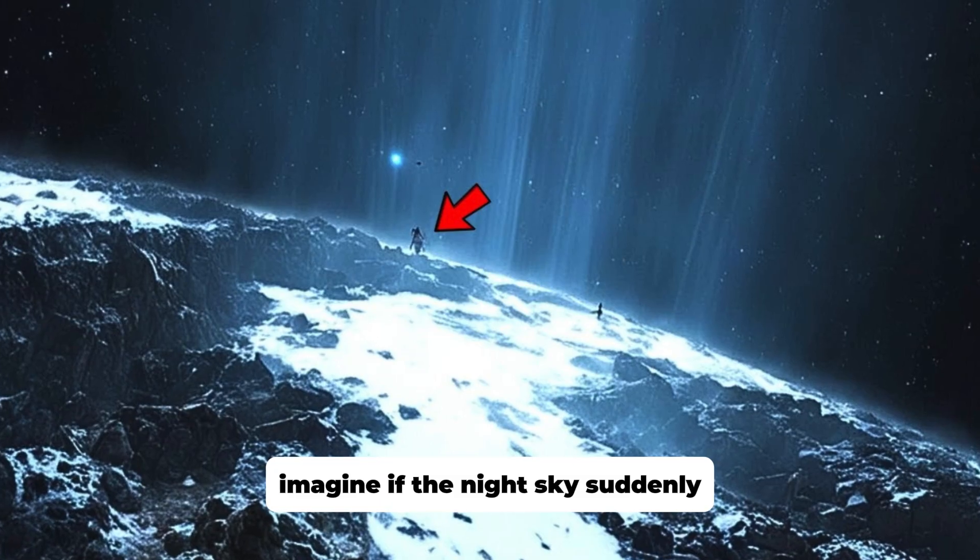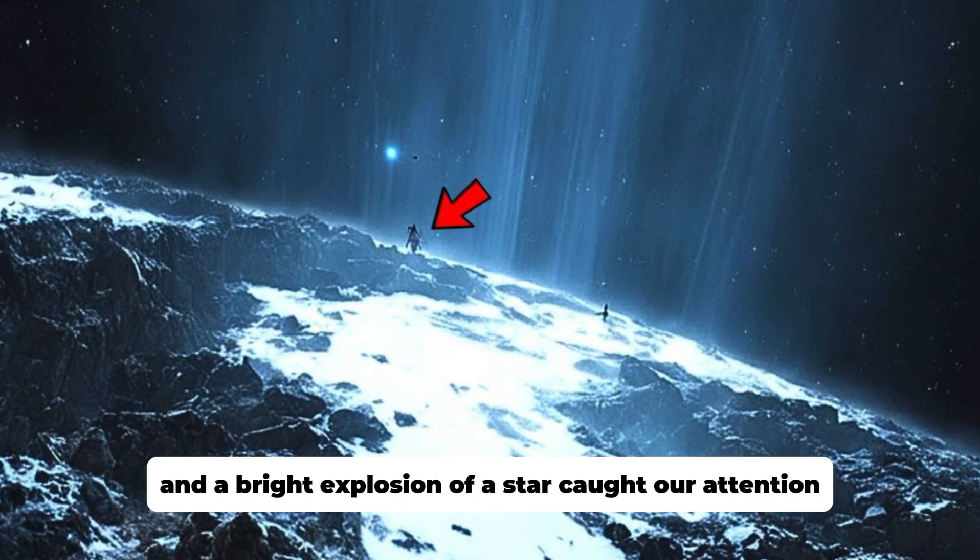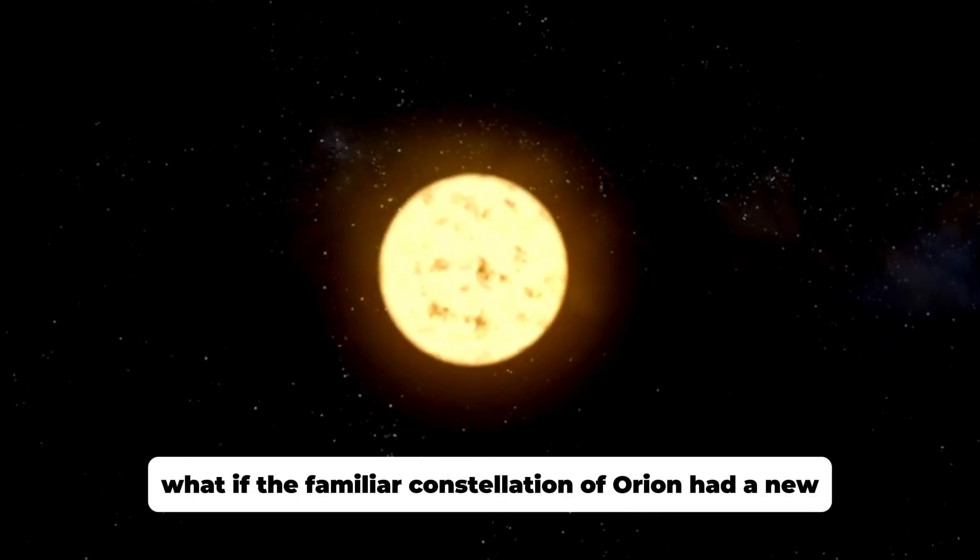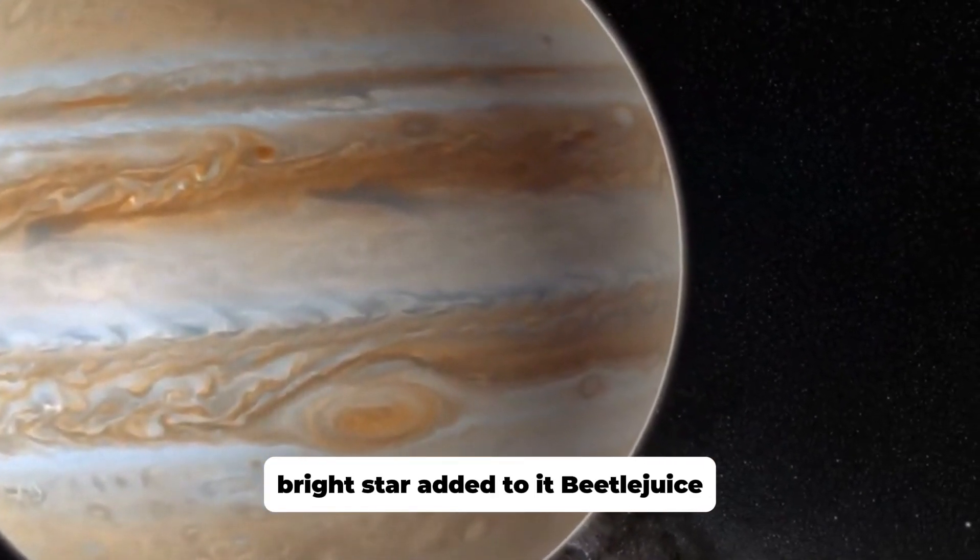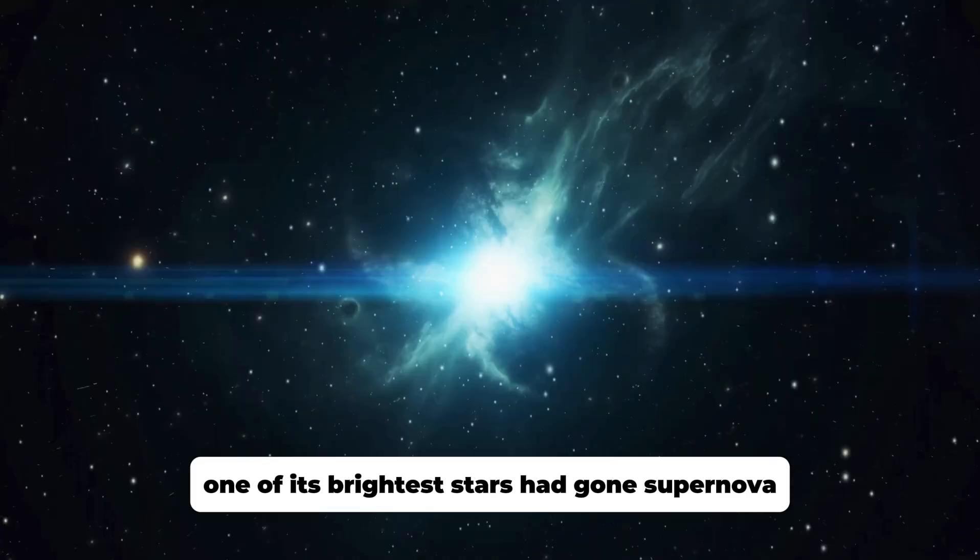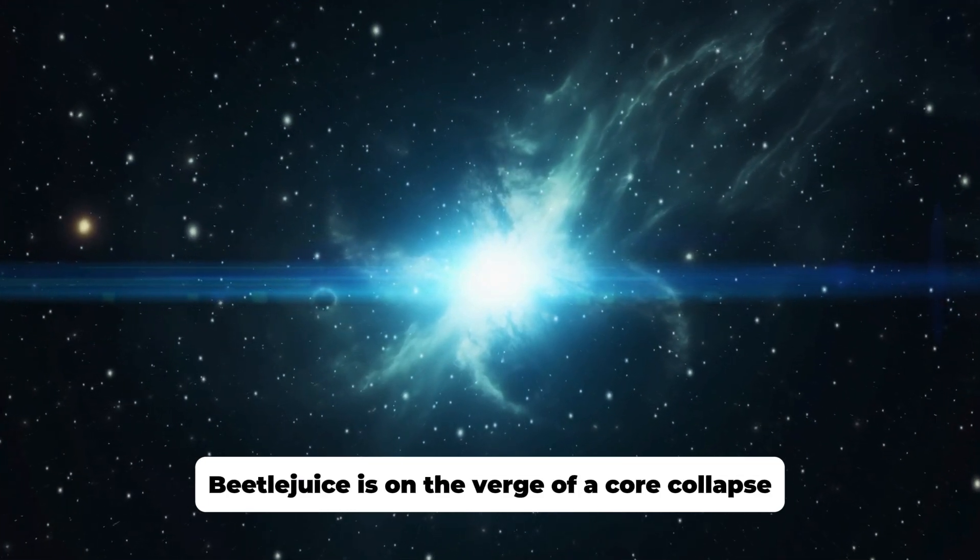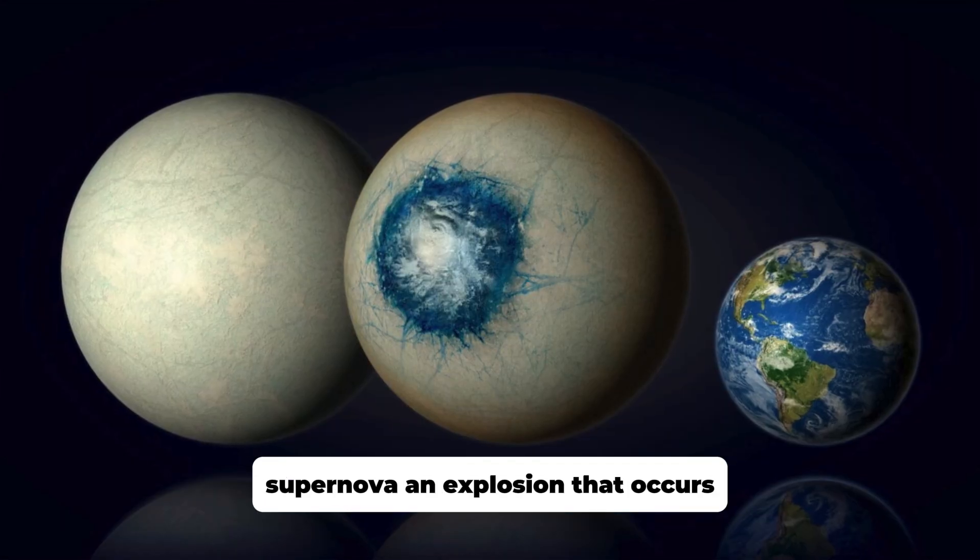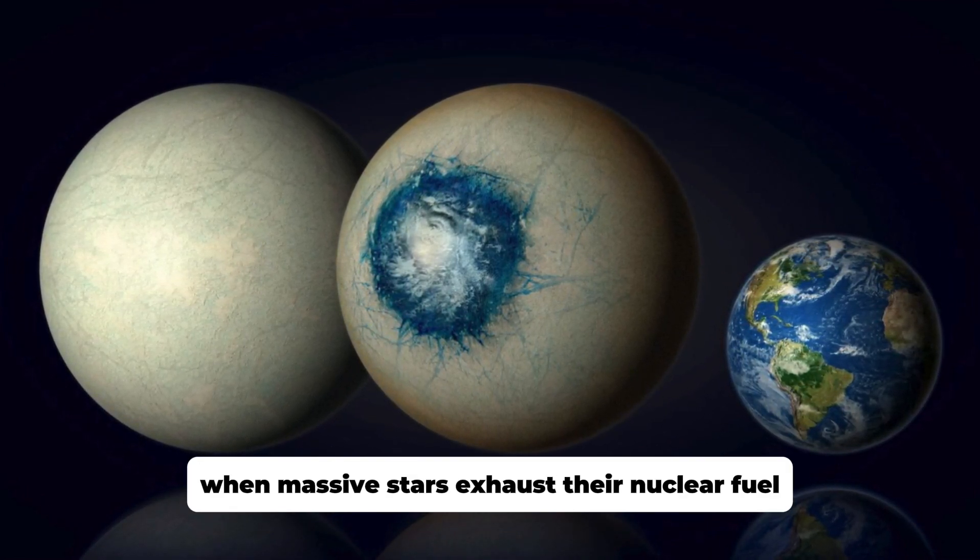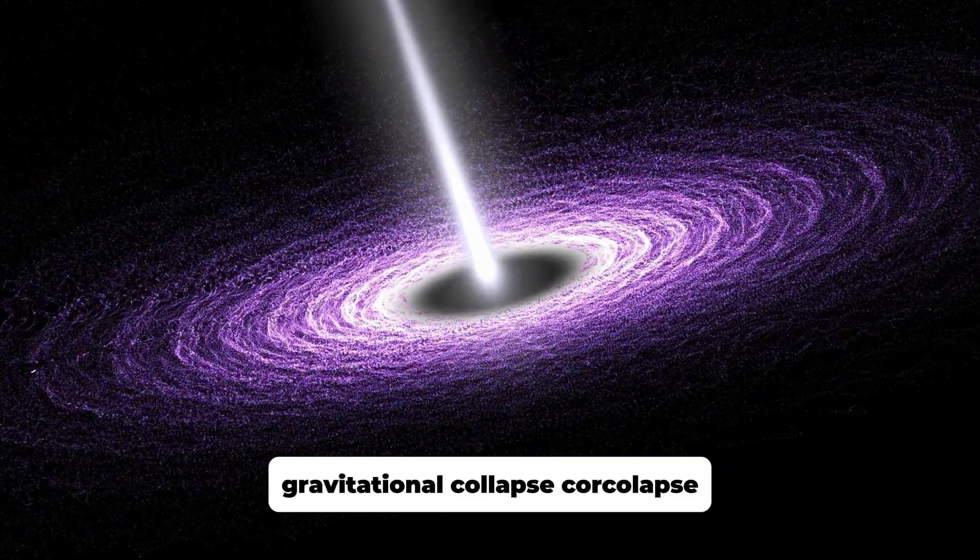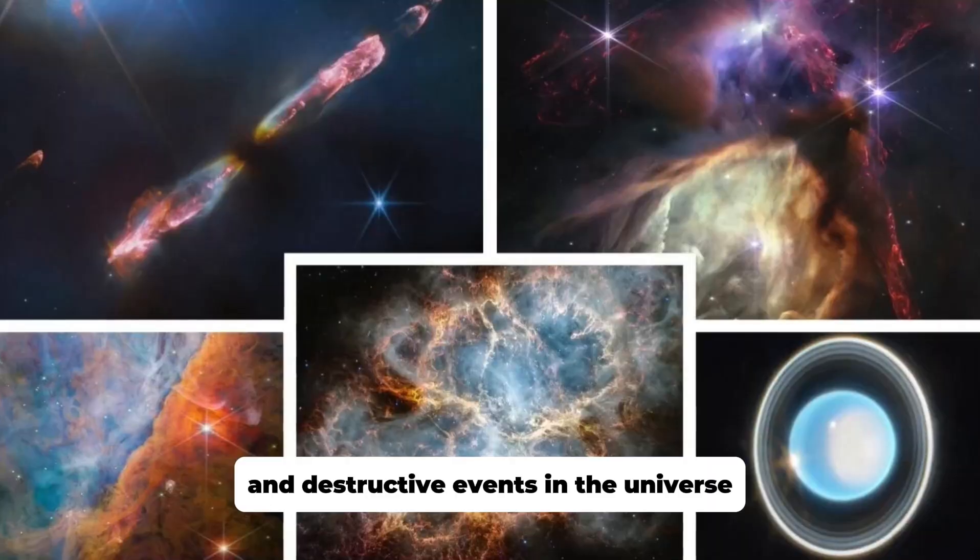Imagine if the night sky suddenly erupted in a brilliant display of cosmic fireworks, and the bright explosion of a star caught our attention. What if the familiar constellation of Orion had a new bright star added to it? Betelgeuse, one of its brightest stars, had gone supernova. What kind of effects might this incredible event have on Earth? Betelgeuse is on the verge of a core collapse supernova, an explosion that occurs when massive stars exhaust their nuclear fuel and can no longer support their own gravitational collapse. Core collapse supernovas are among the most powerful and destructive events in the universe.